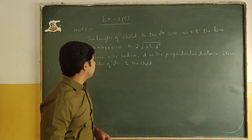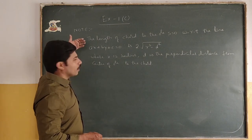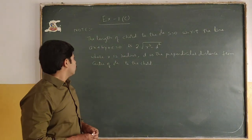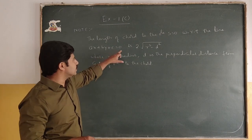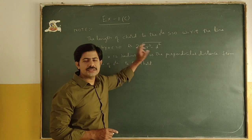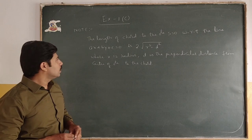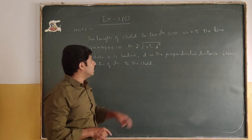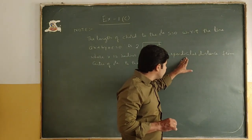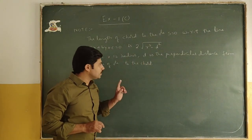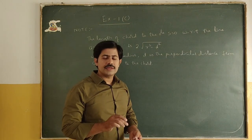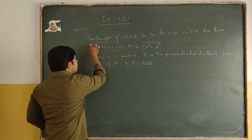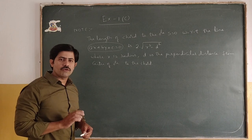The next formula — a very important one — is the length of chord of the circle S=0 with respect to the line ax + by + c = 0, which is 2√(r² - d²). Here r is the radius of the circle, and d is the perpendicular distance from the center of circle to the chord.